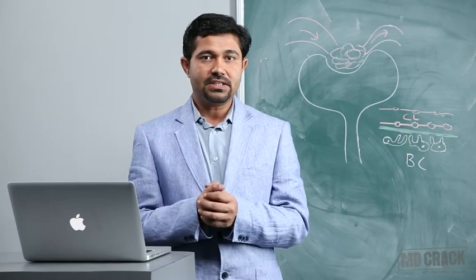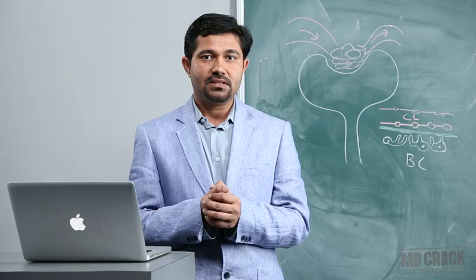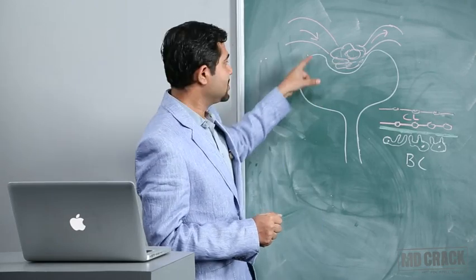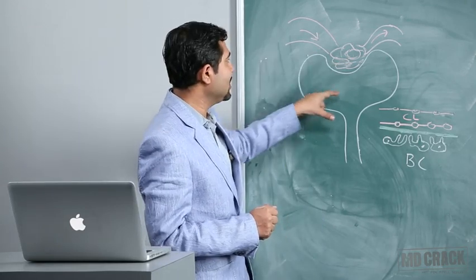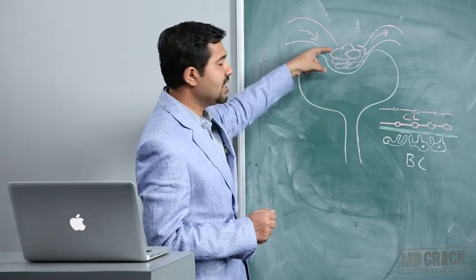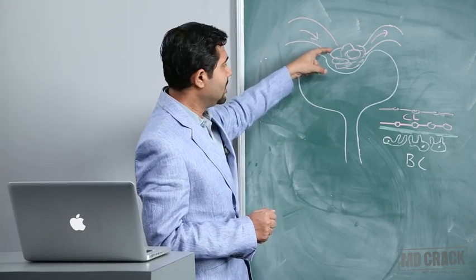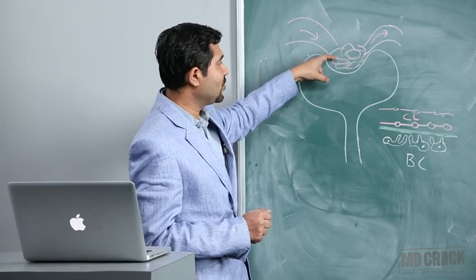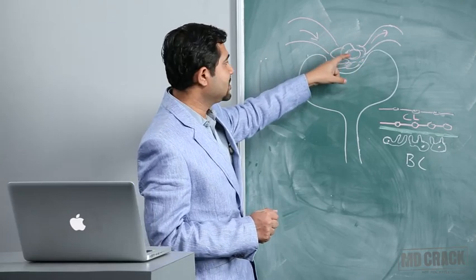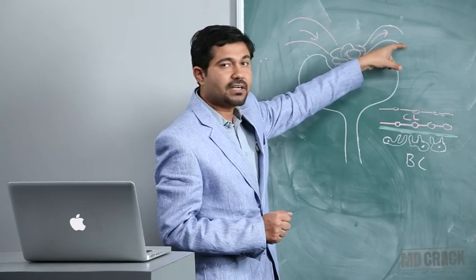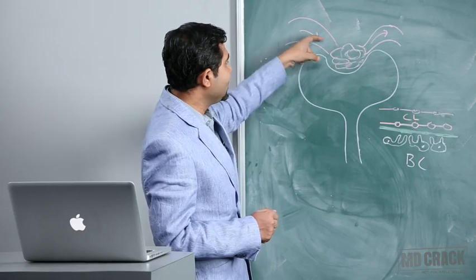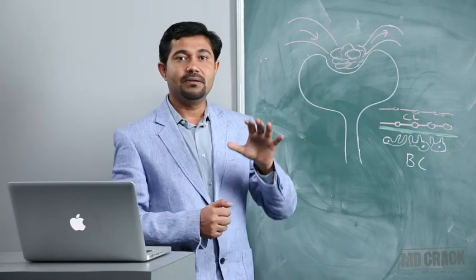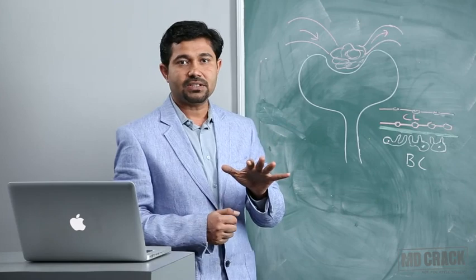Where does filtration occur? It occurs at the glomerulus. This is the figure of the glomerulus, showing the afferent arteriole, the network of glomerular capillaries, and the efferent arteriole. Blood is delivered to the glomerular capillaries with high hydrostatic pressure.